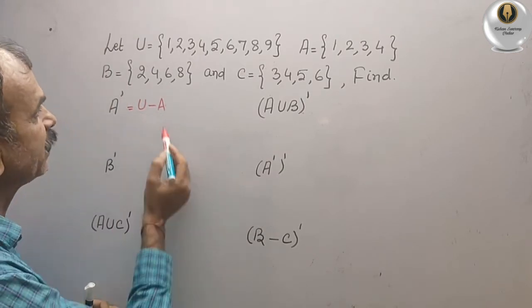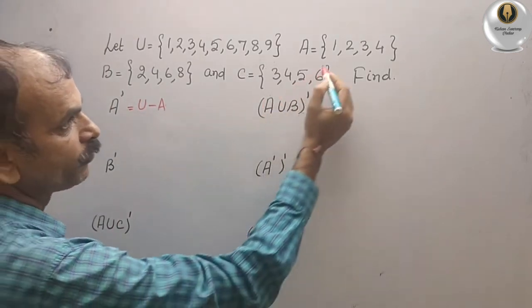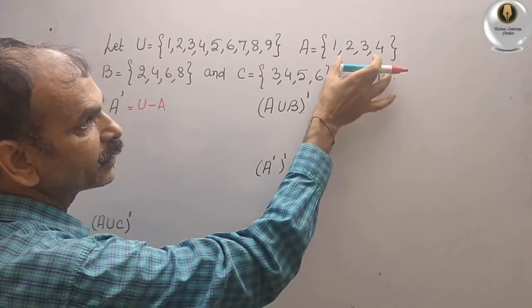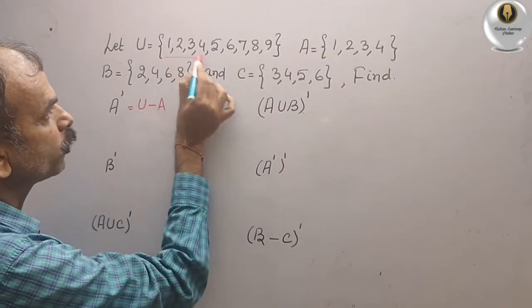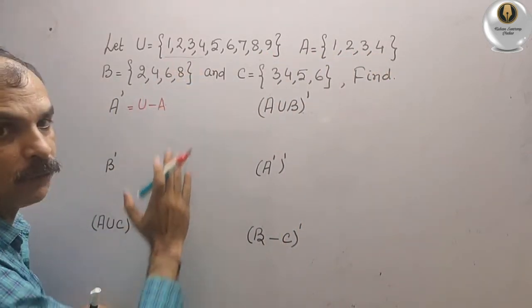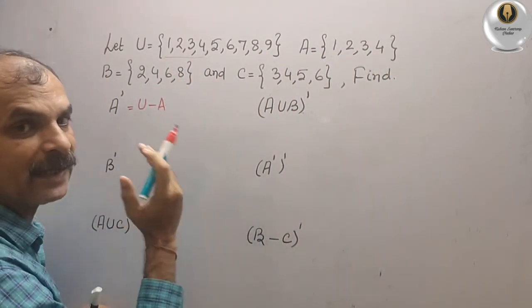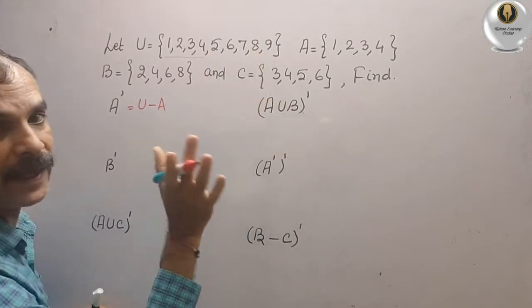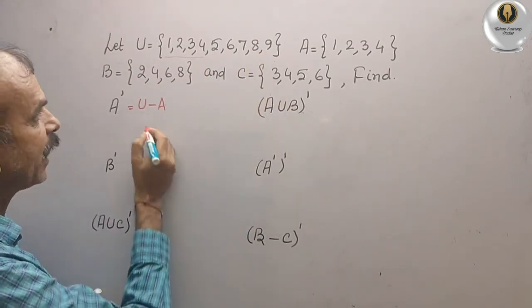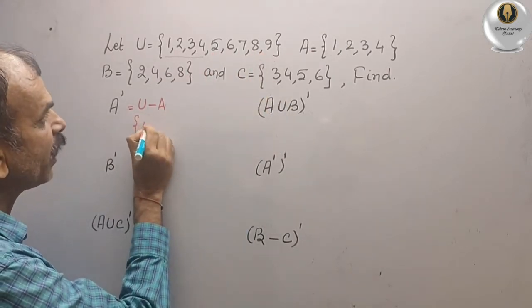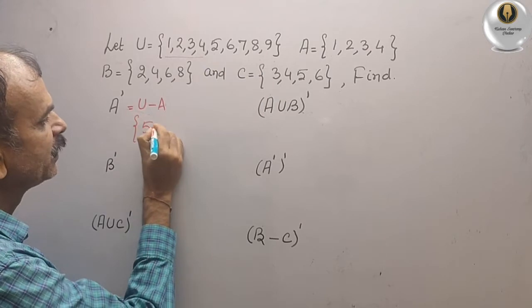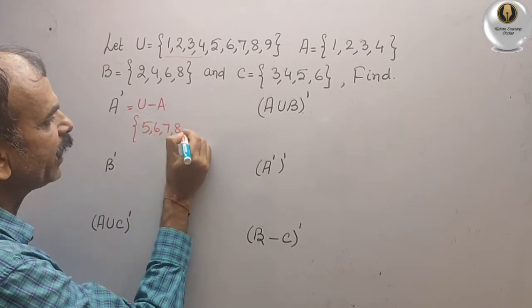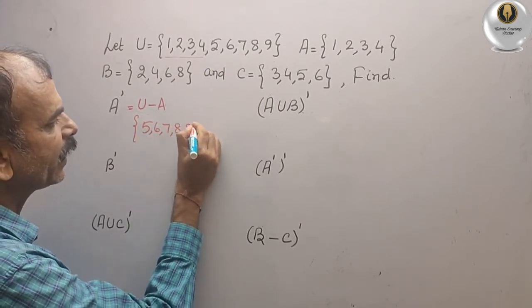From 1 to 4 is common with A, so we eliminate those. The remaining elements are your A dash, which is {5, 6, 7, 8, 9}.